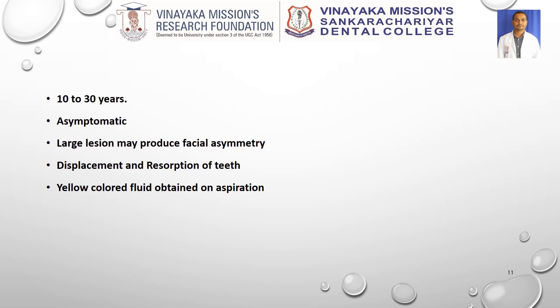The ideal age group for development of a dentigerous cyst is 10 to 30 years. When small, it is mostly asymptomatic. When enlarged, it may produce facial asymmetry without pain. A peculiar feature is that displacement and root resorption are common compared to other odontogenic cysts. The cyst may displace the mandibular third molar to the inferior border or upper ramus. On aspiration, yellow color fluid may be obtained.